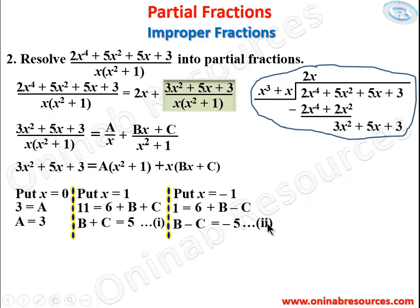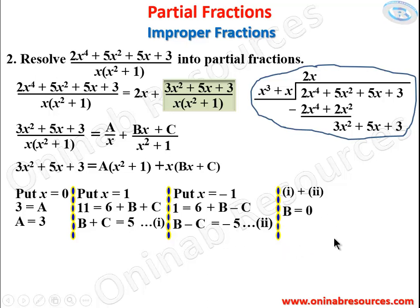Solving Equations 1 and 2 simultaneously: adding them gives 2B = 0, so B = 0. Subtracting Equation 2 from Equation 1 gives 2C = 10, so C = 5.